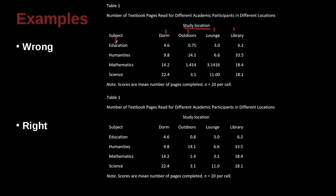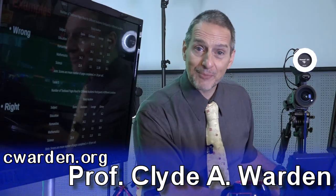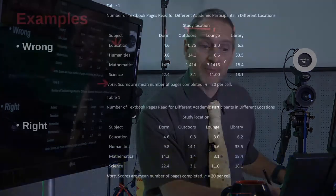We have our subjects here, education, humanities, mathematics. So this looks very clear. What's the problem? We have a nice note here, scores are mean number of pages completed, and the subgroup n equals 20 per cell. So each cell has 20 participants. A little bit hard to see what the problem here is. But if we look a little bit closely at the numbers, we can see what the problem is.